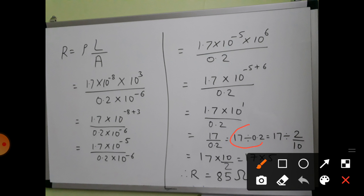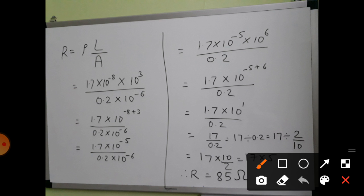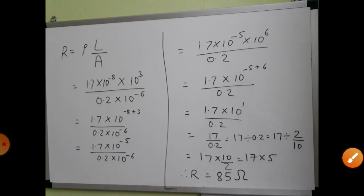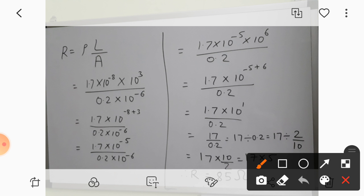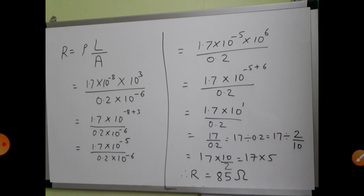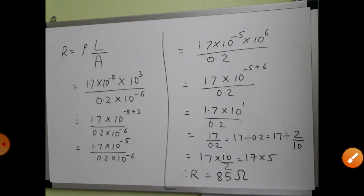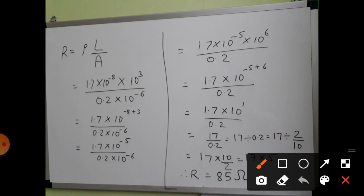17 divided by 0.2: since 0.2 = 2/10, dividing by 2/10 is the same as multiplying by 10/2 = 5. So 17 × 5 = 85. Therefore resistance = 85 ohms.